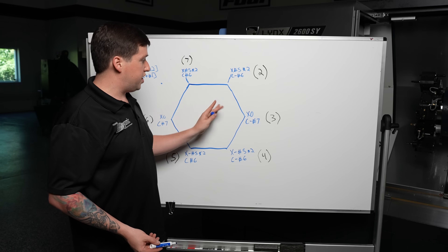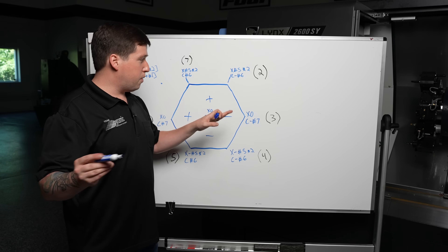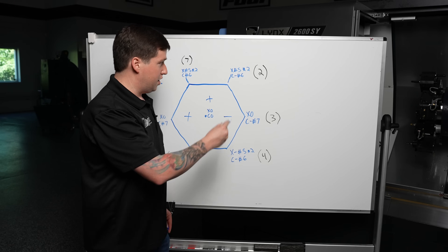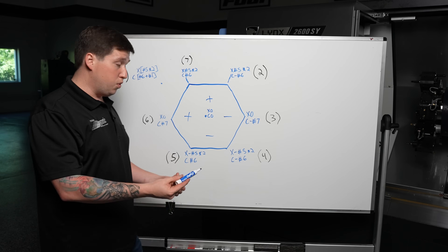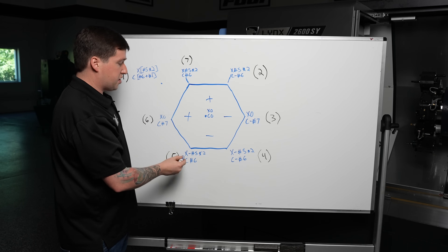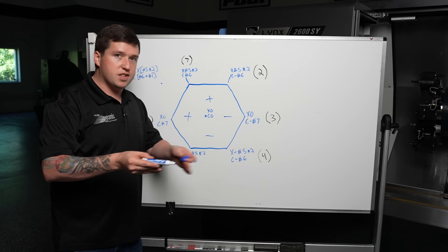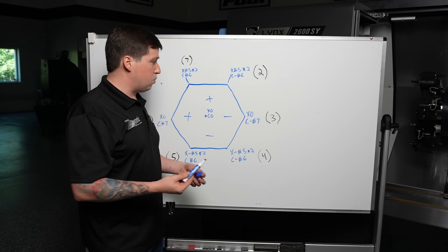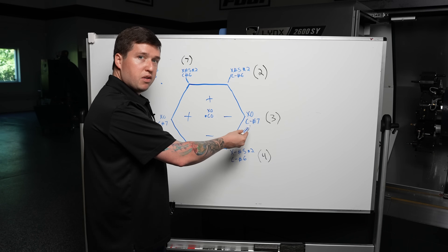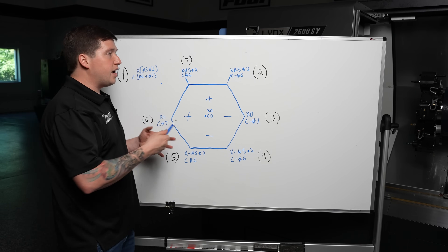Going down here, C is minus pound six just like up here, but it's X that changes — same X value, just on the negative side of the center line. Going over, X doesn't change but C goes from negative to positive. Going up, C doesn't change but X goes from negative to positive. That's how you get those four points — they're all done with the exact same numbers, just negative or positive iterations. The last one is X of zero because we are on the center line, and C is minus pound seven. The only difference on the other side is that it's positive pound seven.